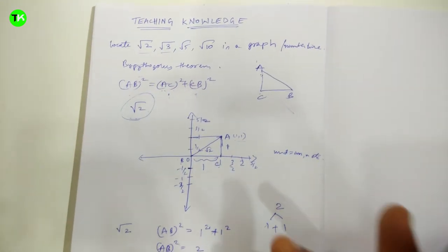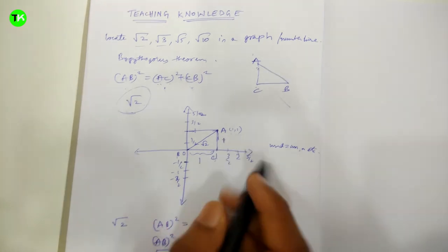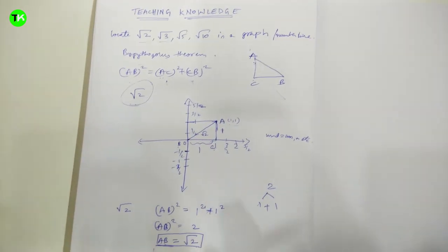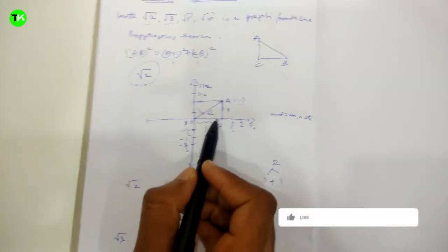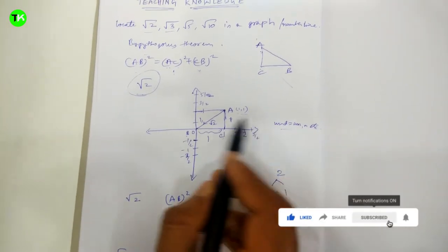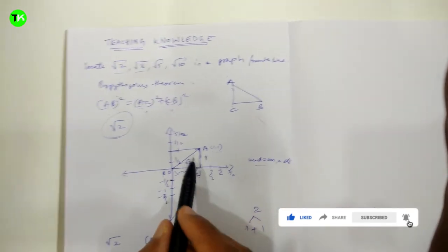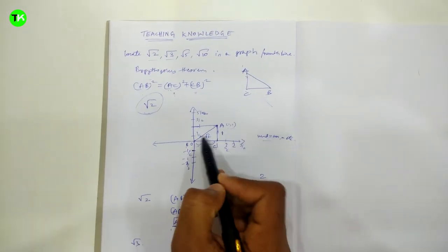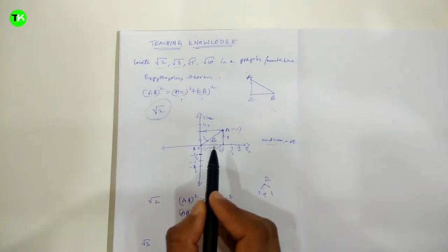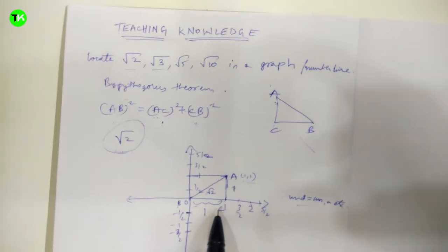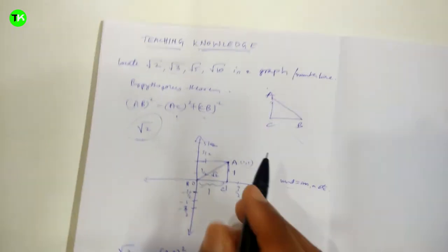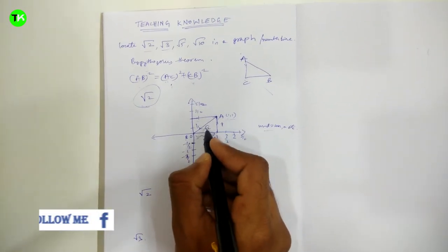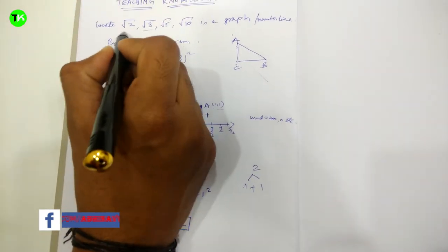You can also use geometry with a compass: take one unit as the radius, use B as the center to draw an arc, then use C (one unit from origin) as the center and draw another arc one unit away — their intersection gives point A, and the hypotenuse represents √2. Now let's move on to root 3.